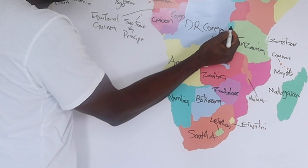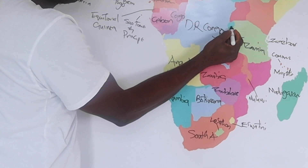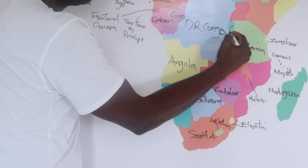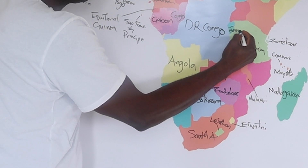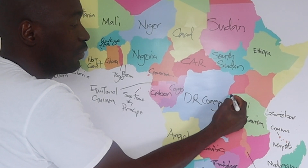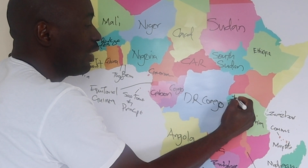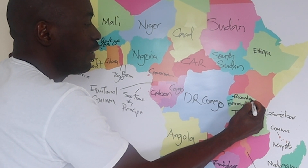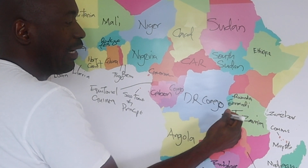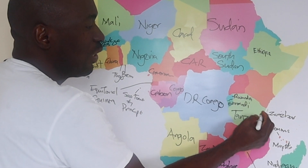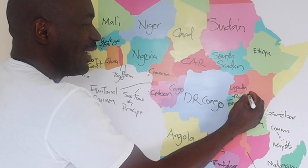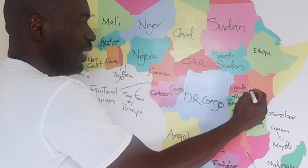And then just here there are two countries that are really small — landlocked countries. So one of them is Burundi, down there. And just above Burundi is Rwanda. Rwanda has been doing a lot of good things recently. And above Rwanda we have Uganda.